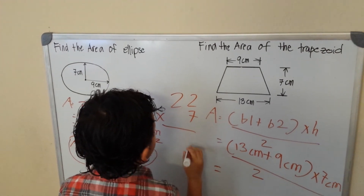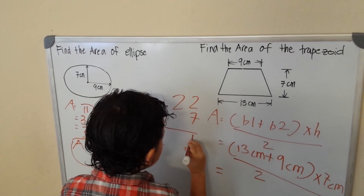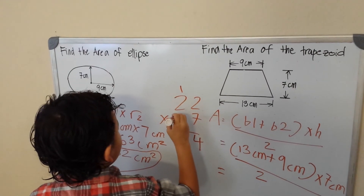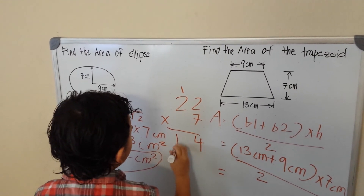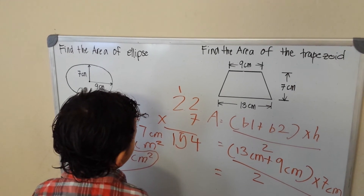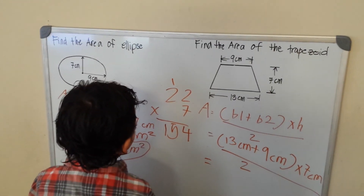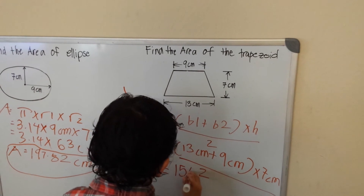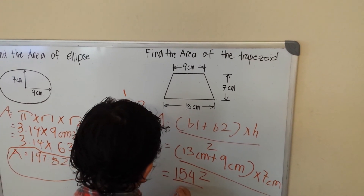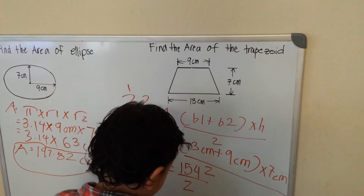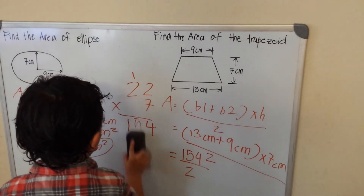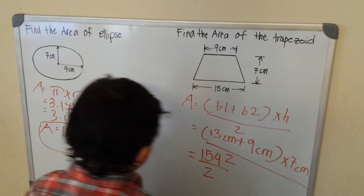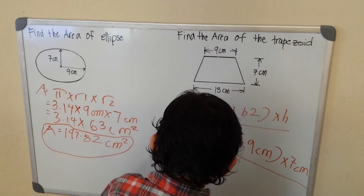Now 22 times 7. 7 times 2 is 14, carry the 1. 7 times 2 is 14, plus 1 is 15. So 22 times 7 is 154.